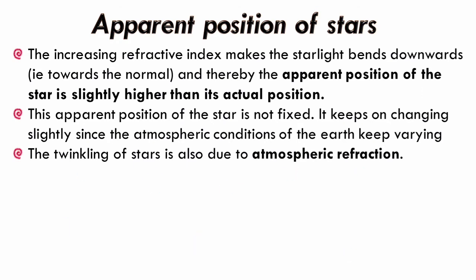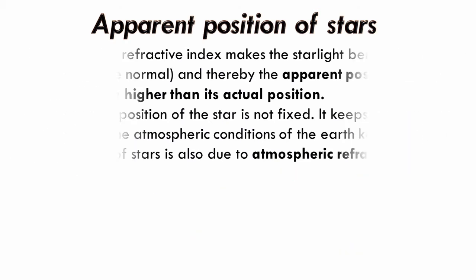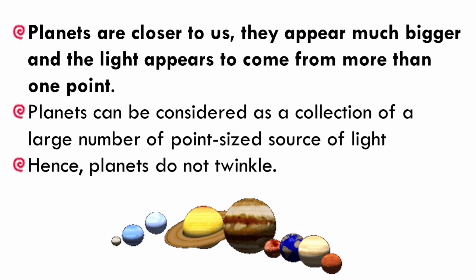Though stars twinkle at night, planets do not twinkle at all. This is because the stars appear very very small to us and stars are considered to be point sources of light. On the other hand, planets appear to be quite big to us and planets can be considered as a collection of large number of point-sized light sources.